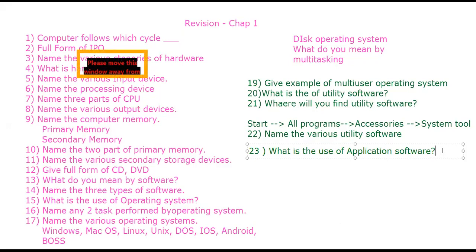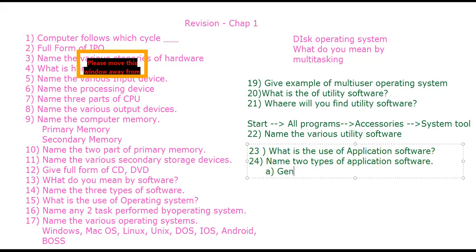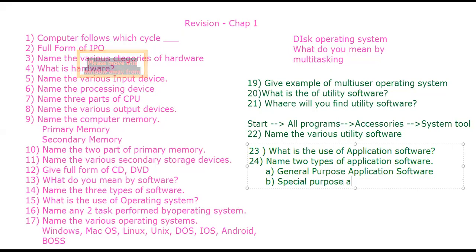Name the two types of application software. The two types are: general purpose application software and special purpose application software. Please make that correction in your book.